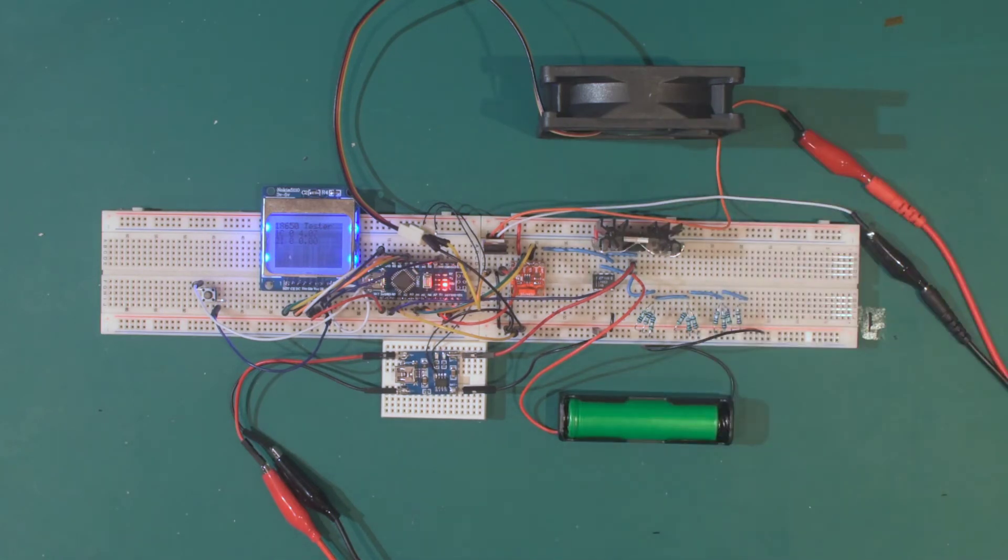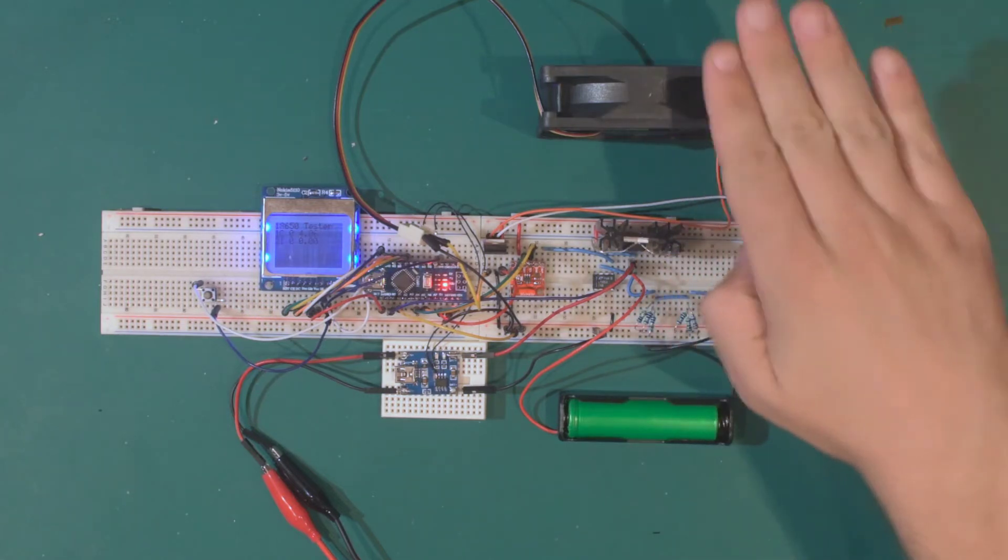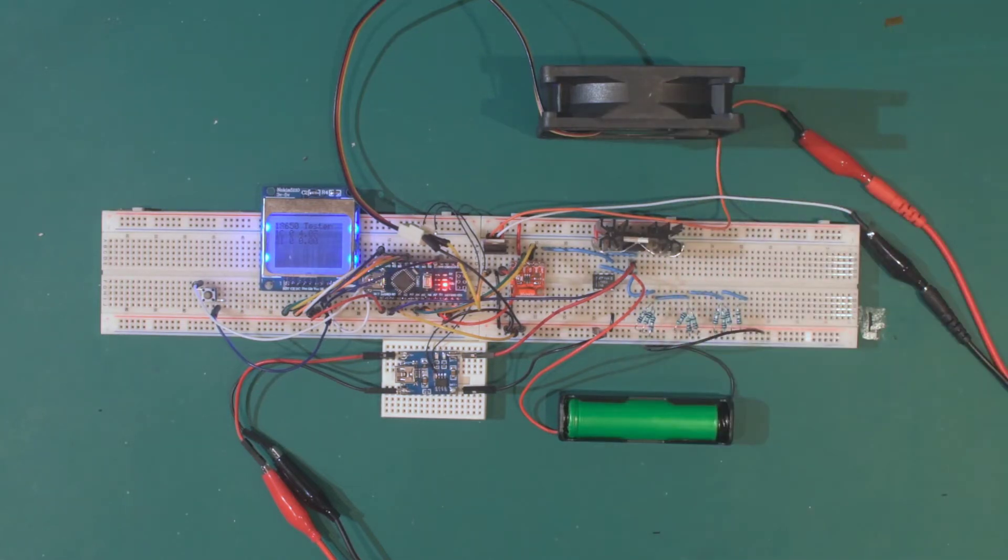While we're here, I've made one other modification which is the return of the desktop fan. Some airflow over this heatsink to keep it cool while discharging was definitely needed. This has turned out to be more than enough to keep this heatsink nicely cool, even through a one amp discharge.